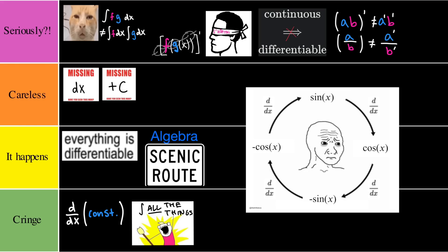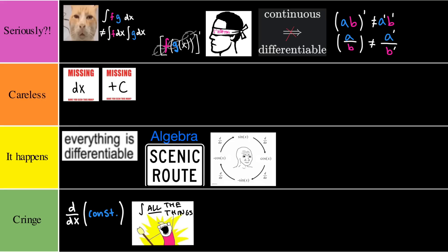Next we have forgetting the minus sign. Now this one happens all the time so we have to go into it happens tier. This is particularly true when you're handling sine and cosine. When you take the derivative of sine, you get cosine. And when you take the derivative of cosine, you get negative sine. Which is something we just have to remember.